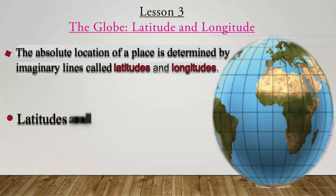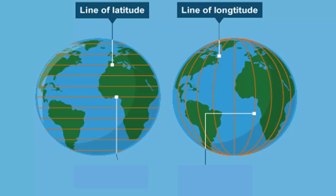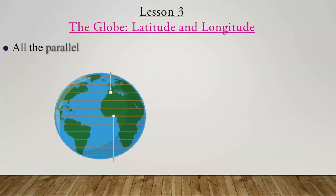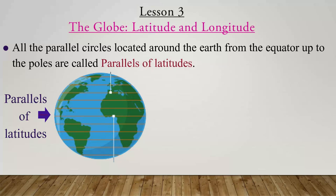Latitudes and longitudes are measured in degrees and minutes. Latitude, or akshansh, and longitude, or deshantar. All parallel circles located around the earth from the equator up to the poles are called parallels of latitudes.